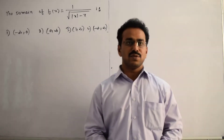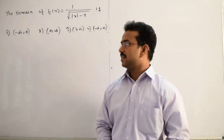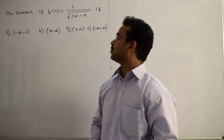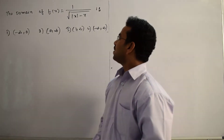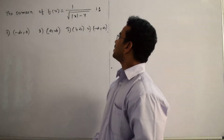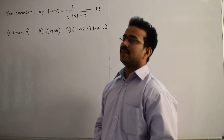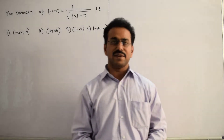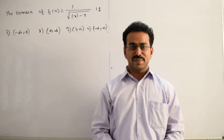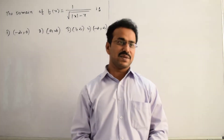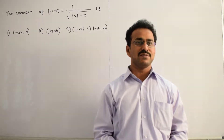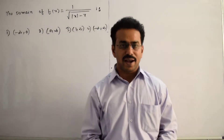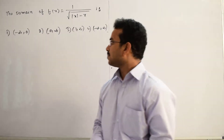Let's discuss the solution of the given question. The question asks for the domain of the function f(x) = 1 / √(|x| - x). Our task is to calculate the domain for the given function. The domain is nothing but the set of values of x for which the function f(x) is defined.